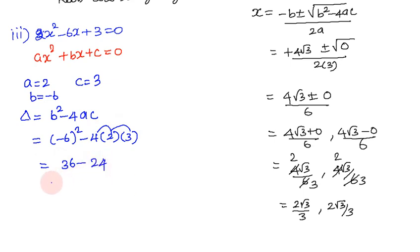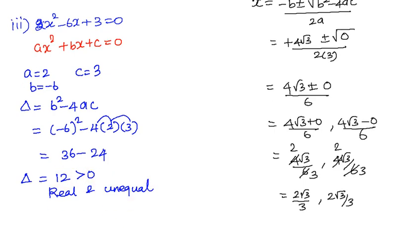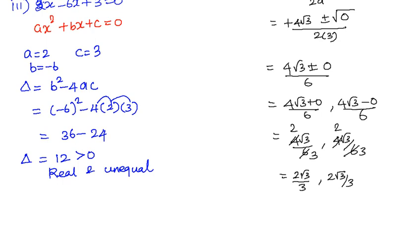The discriminant value is 36 - 24 = 12. Since Δ = 12 > 0, the roots are real and unequal.